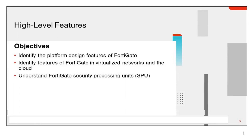This topic comes up in interviews 40 to 50 percent of the time, especially for L2 or L3 expert roles. We will identify the features of FortiGate in a virtual network and understand the FortiGate Security Processing Unit (SPU) — a group of hardware chips that makes FortiGate firewall performance quite good by offloading traffic from the CPU to dedicated hardware chips.